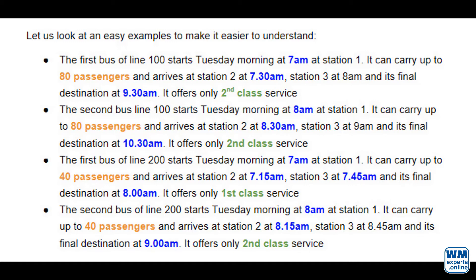Now commuter Bob is looking for a bus. He likes to sleep longer so he can be at the bus station earliest at 7:30 am. He has a second class ticket and must be at the final destination at 9 am. So bus line 100 with the bus starting at 8 am is going to be his choice. Now commuter Mandy is looking for a bus. She has a first class ticket and can be at the bus station at any time. However, she must be at work at 8 am. So bus line 200 with the bus starting at 7 am is going to be her choice. But what about commuters who must be at work already at 7 am? As there is no bus available on Tuesday morning covering this requirement, they will have to start on Monday already. This is also why we are sometimes picking our goods on day 1, although the truck picking up the goods is arriving only on day 2. If your resources are not able to complete picking on day 2 before truck arrival, there is no option other than doing the picking on day 1.